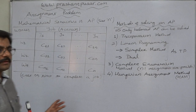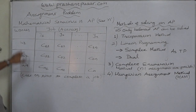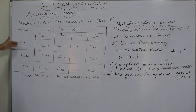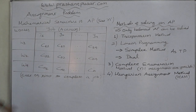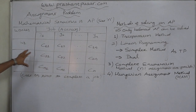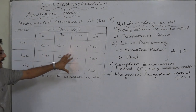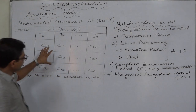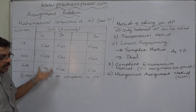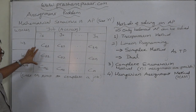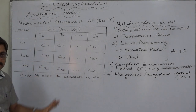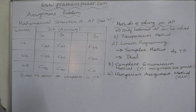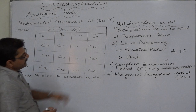Let us first talk about the balanced assignment problem. In this matrix, columns represent workers 1 to n, and rows represent jobs or activities 1 to n. The entries C₁₁, C₁₂, etc. are either the cost of completing the job by a particular worker, or the time in minutes, hours, days, or weeks required for a worker to complete a particular job. These values are not equal — that is the main point.